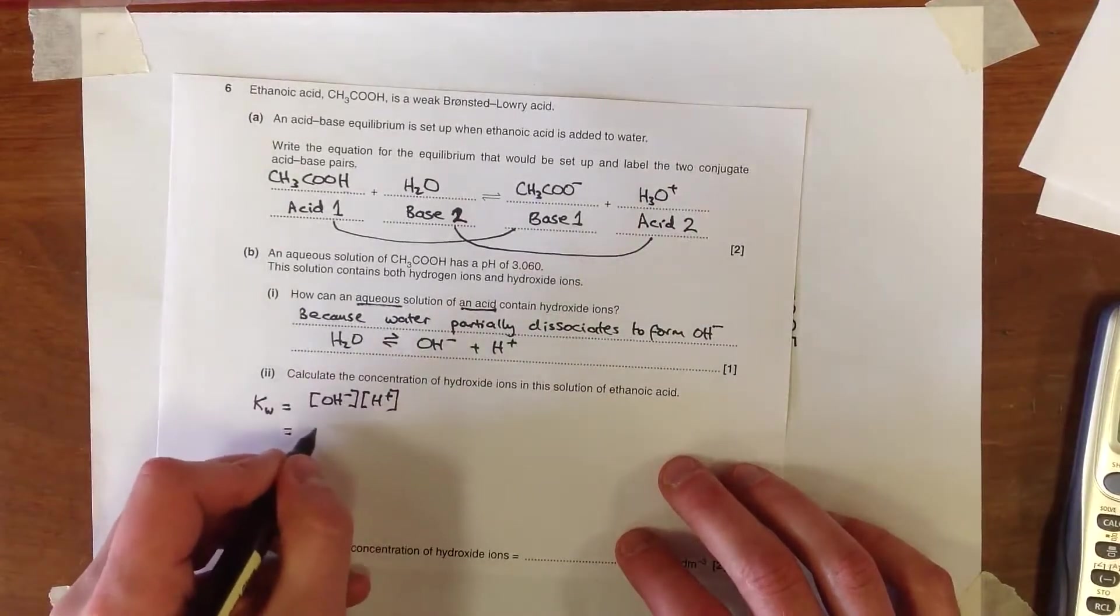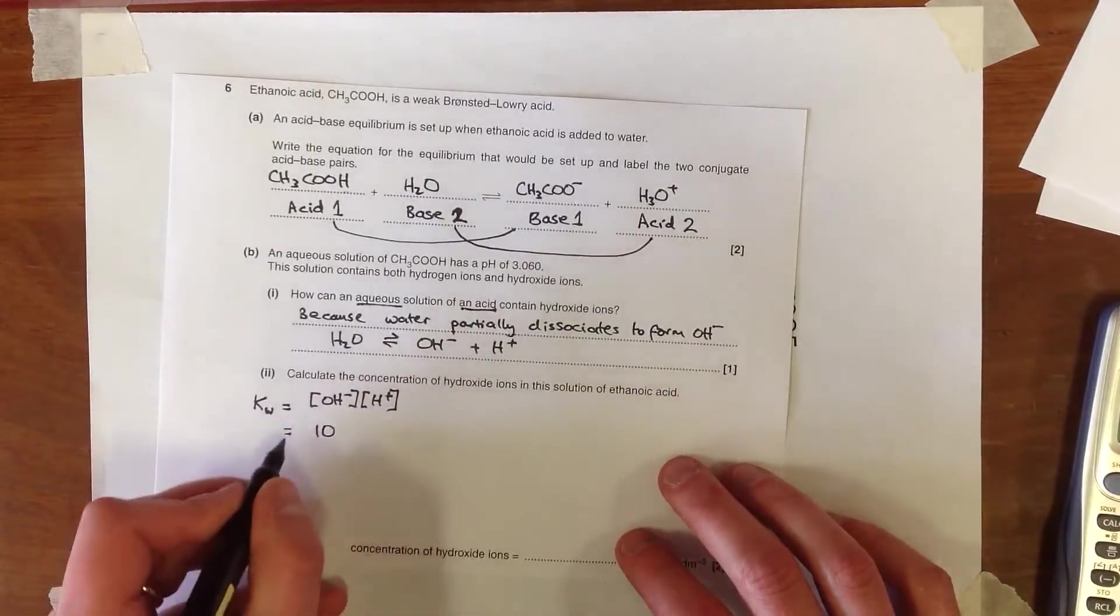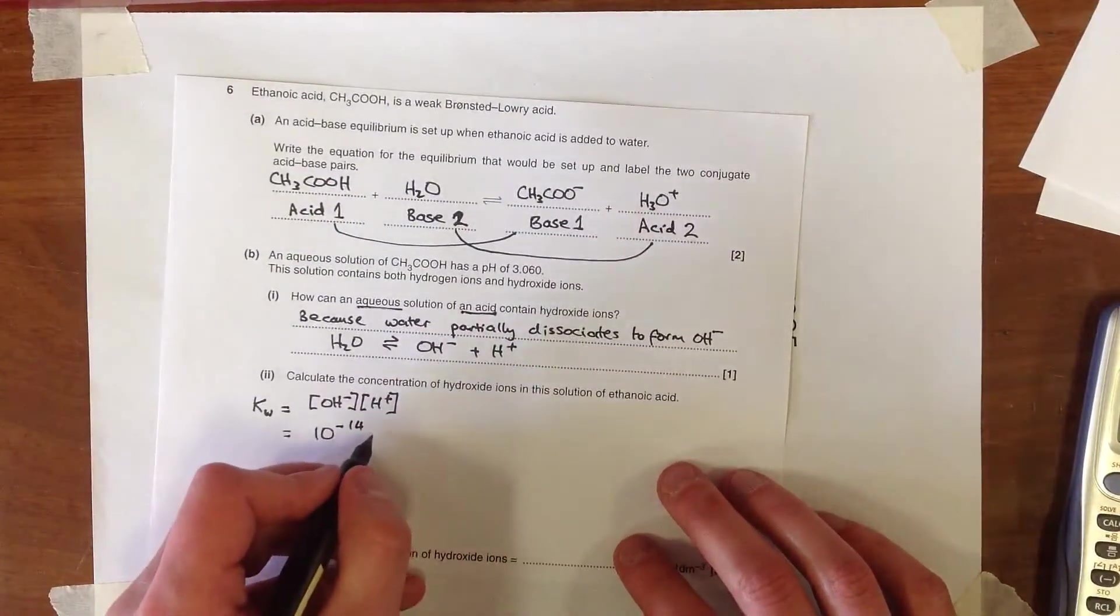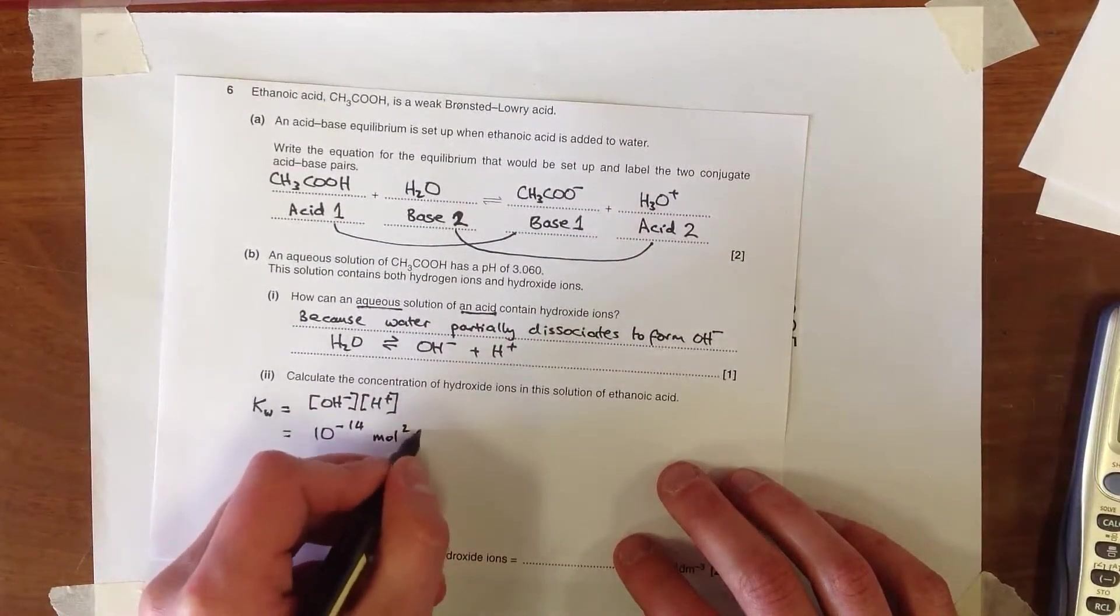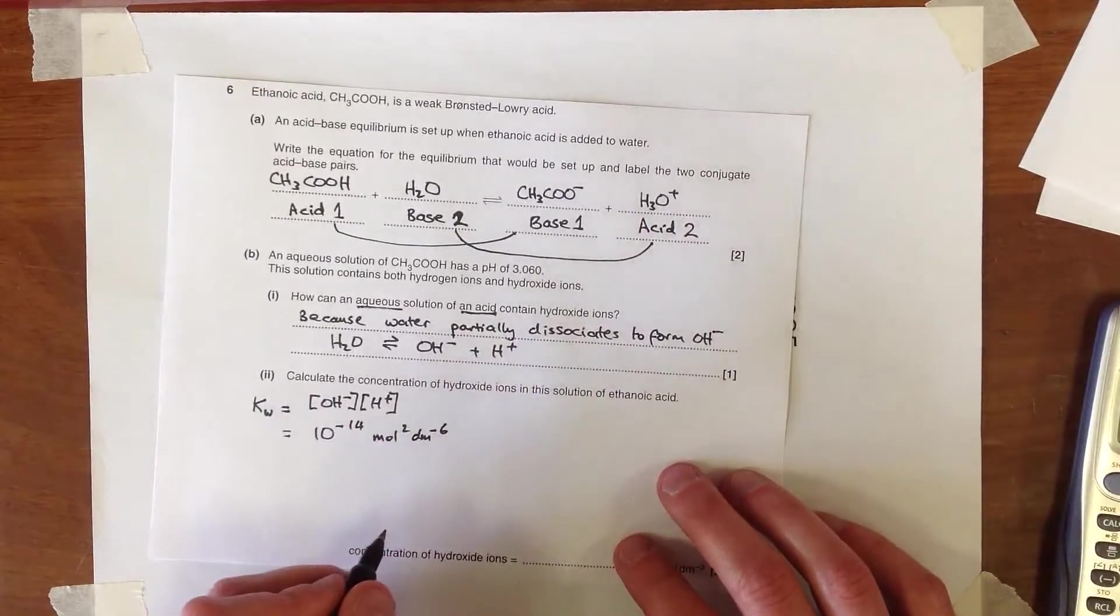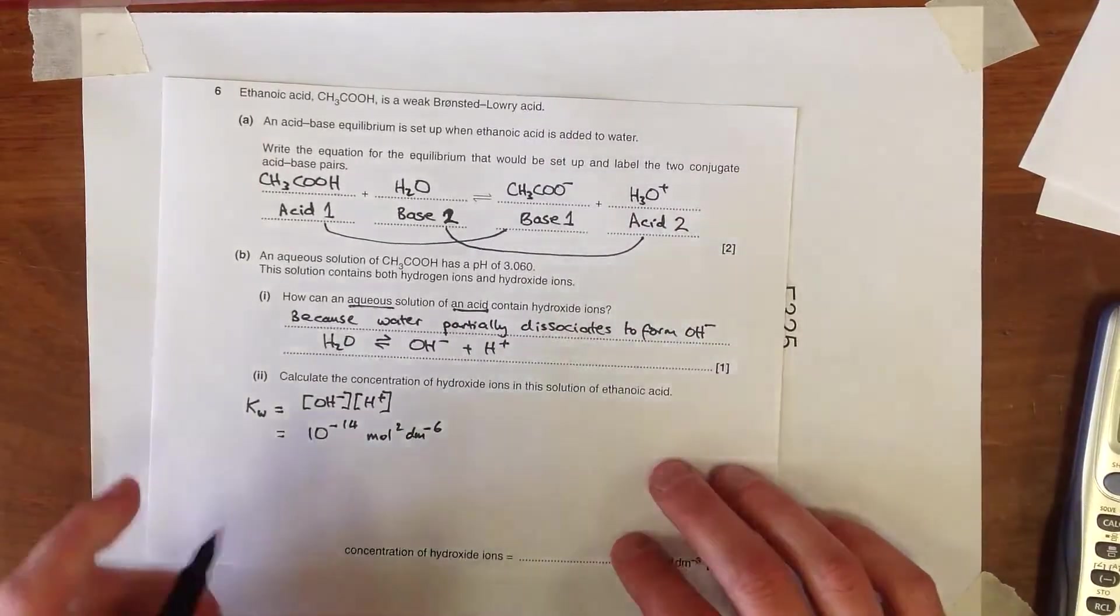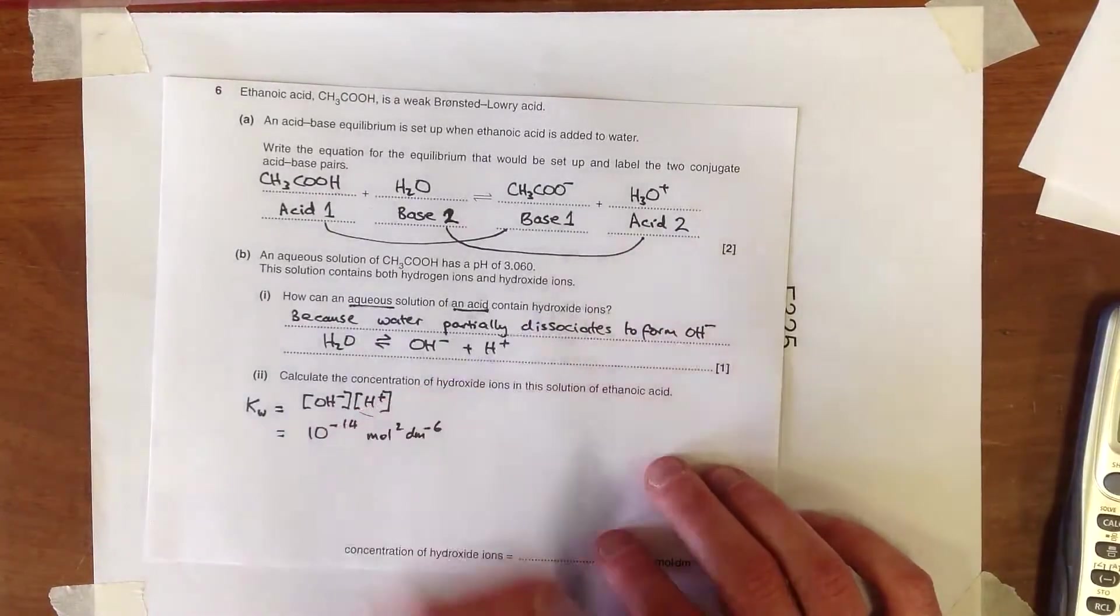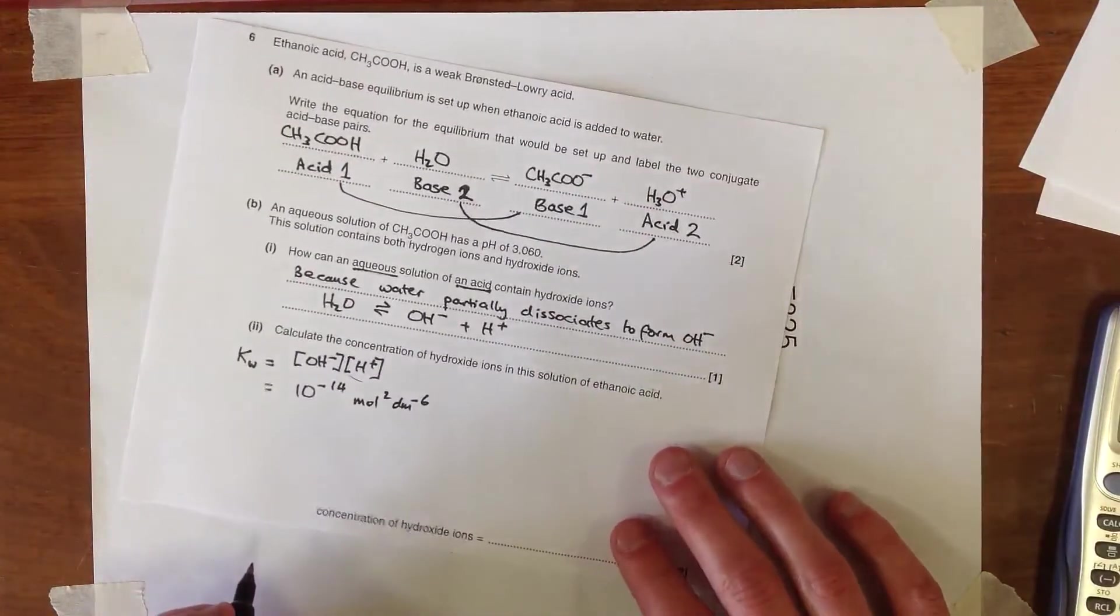And so we can just write the ionic product in this case. And this, at 25 degrees at least, which is what we're assuming if we're not told anything otherwise, is 10 to the power of -14 mole squared decimetres to the minus 6. And this relationship here enables us, if we know the concentration of H+, which we can get from the pH, to work out the concentration of OH-.